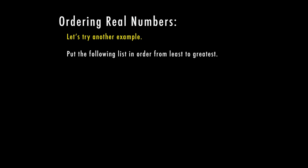I hope you find that pretty simple. But let's try another example. We're going to again put this list in order from least to greatest. Now we have the square root of 83 — we only have one square root — but we have pi squared in there, so we do have to figure out pi squared. We already have one number written in decimal form: 9.5. So let's find the square root of 83. I do know that's between the square root of 81 and the square root of 100, which is 9 and 10. So it's going to be 9 point something, and it's going to be much closer to 81 than to 100. So I'm just going to estimate 9.2.